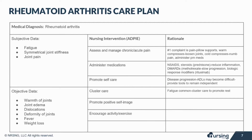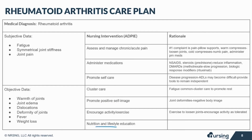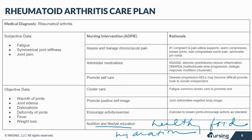Help to promote a positive self-image, as patients with joint deformities may experience a negative body image. Although these patients do fatigue easily, encourage exercise to help loosen those joints — encourage activity as tolerated. Nutrition and lifestyle education is also critical. When patients are in pain, they may turn to comfort foods, but instead help them make healthy food choices. Avoid alcohol, avoid smoking, encourage hydration, and patients may also want to consult with a nutritionist regarding an anti-inflammatory diet.